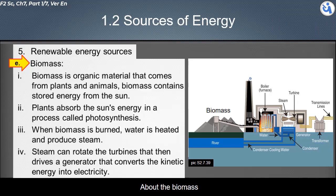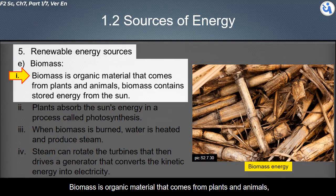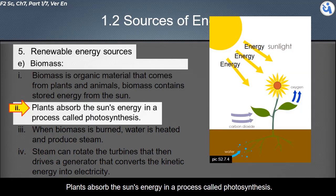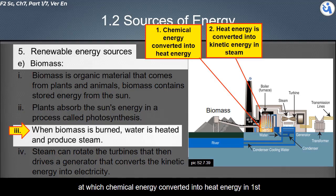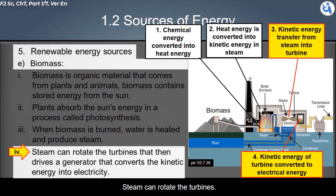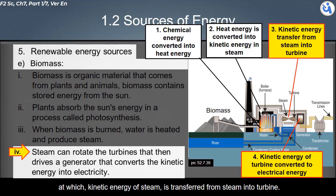Biomass is organic material that comes from plants and animals and contains stored energy from the Sun. Plants absorb the Sun's energy through photosynthesis. When biomass is burned, water is heated to produce steam — chemical energy converts into heat energy, and then heat energy converts into kinetic energy in steam. The steam rotates the turbines, transferring kinetic energy from steam to turbine. The turbine then drives a generator that converts the kinetic energy into electricity.